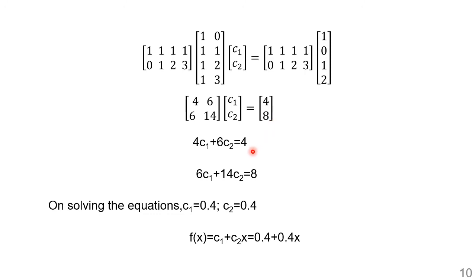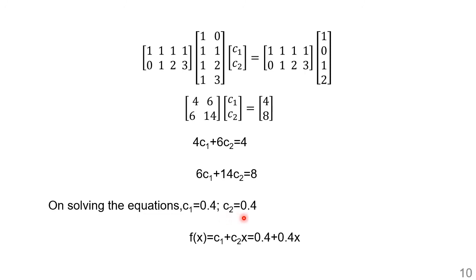Solving the two equations 4c1+6c2=4 and 6c1+14c2=8, we get c1 = 0.4 and c2 = 0.4.